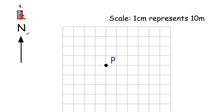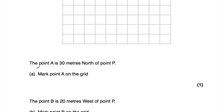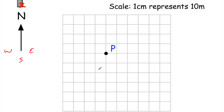Question number four: we've been given a grid and we're told one centimeter represents 10 meters. We've got north, east, south, and west. Part A: point A is 30 meters north of point P, and we've been asked to mark A on the grid. North is up, so A is going to be above P. 30 meters on this diagram would be three centimeters, because one centimeter is 10 meters. So three centimeters above P is where we mark point A.